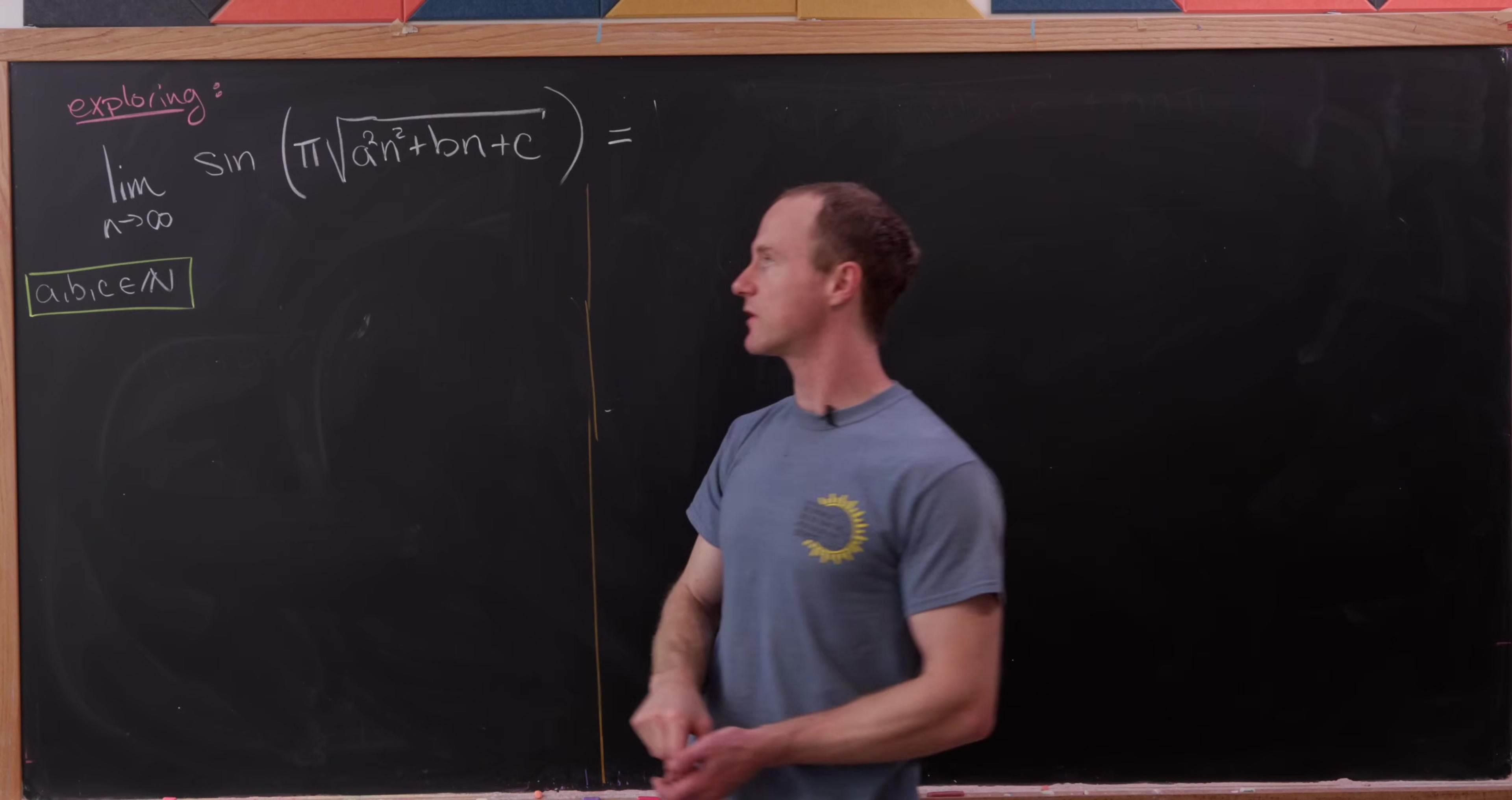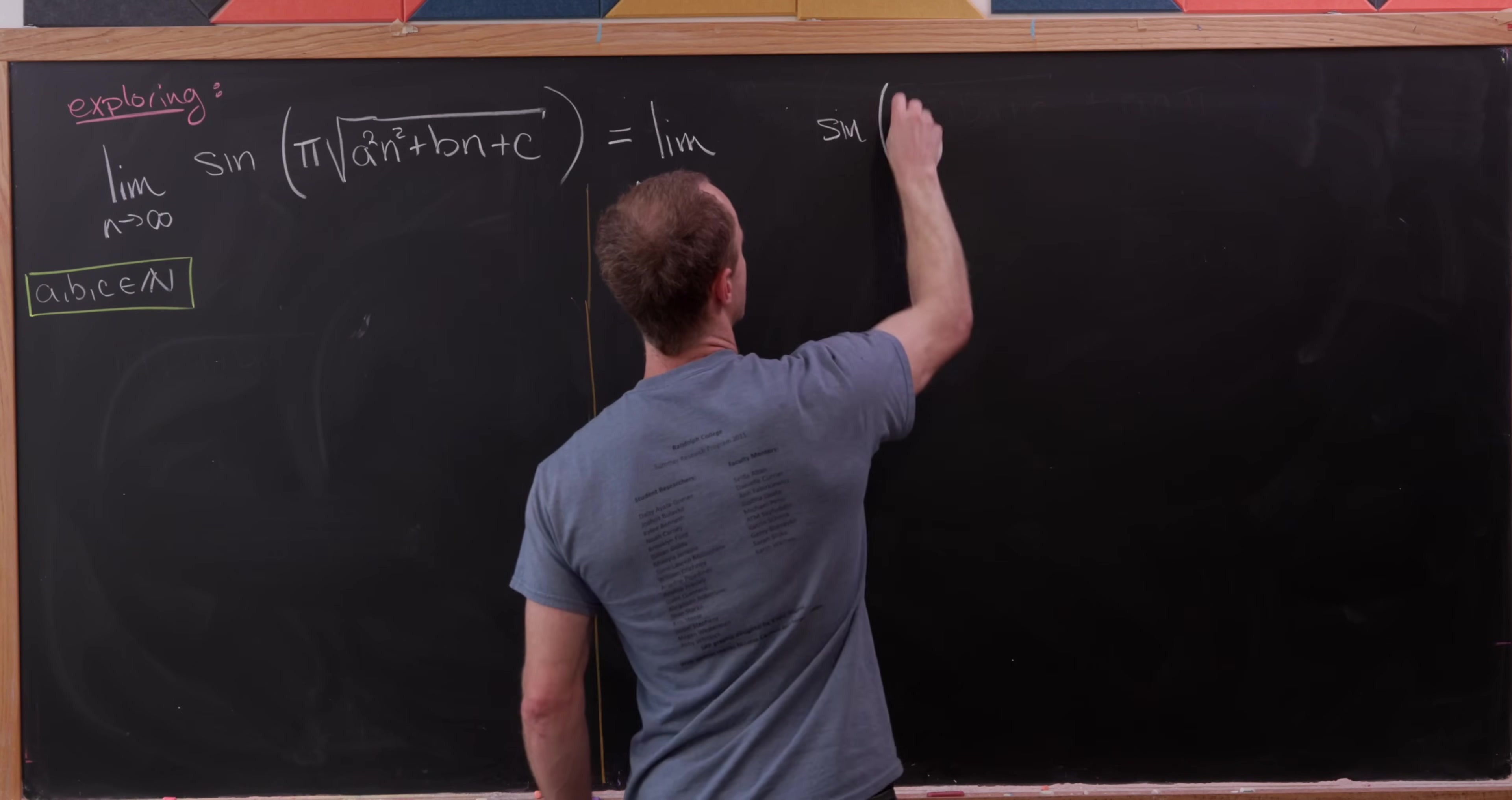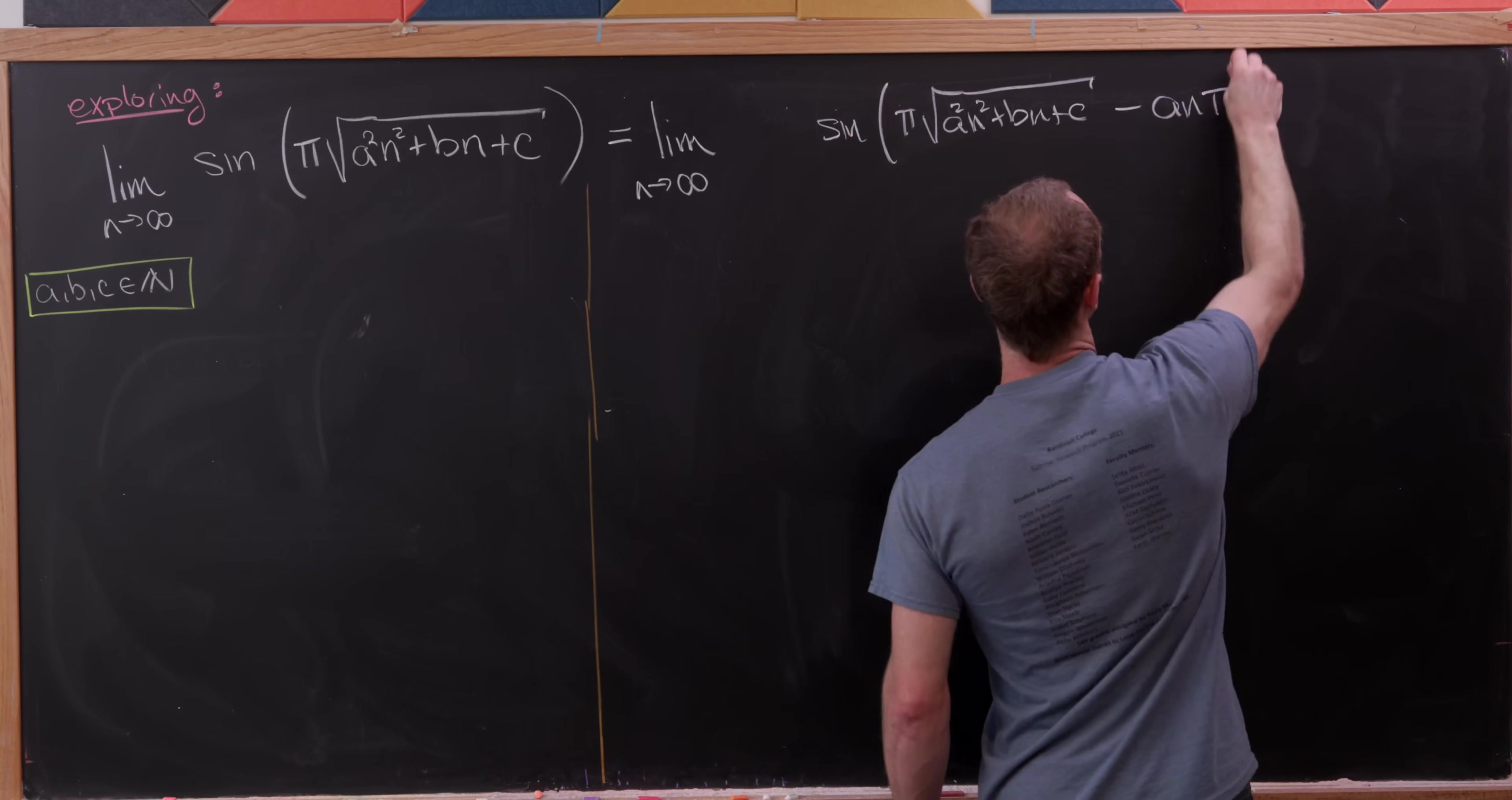Now let's use the periodicity of sine to rewrite this a little bit. I'm going to start writing something that ends up not being true, but then we can fix it pretty quickly. We'll take the sine of π times the square root of a²n² plus bn plus c, and then I'm going to subtract an times π.